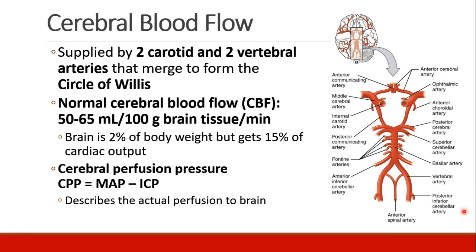Normal cerebral blood flow is approximately 50 to 65 milliliters per 100 grams of brain tissue per minute. Notice that even though the brain is only 2% of body weight, it gets 15% of cardiac output. Cerebral perfusion pressure can be calculated as mean arterial pressure minus intracranial pressure, and this describes the actual pressure of arterial blood flow perfusing the brain.